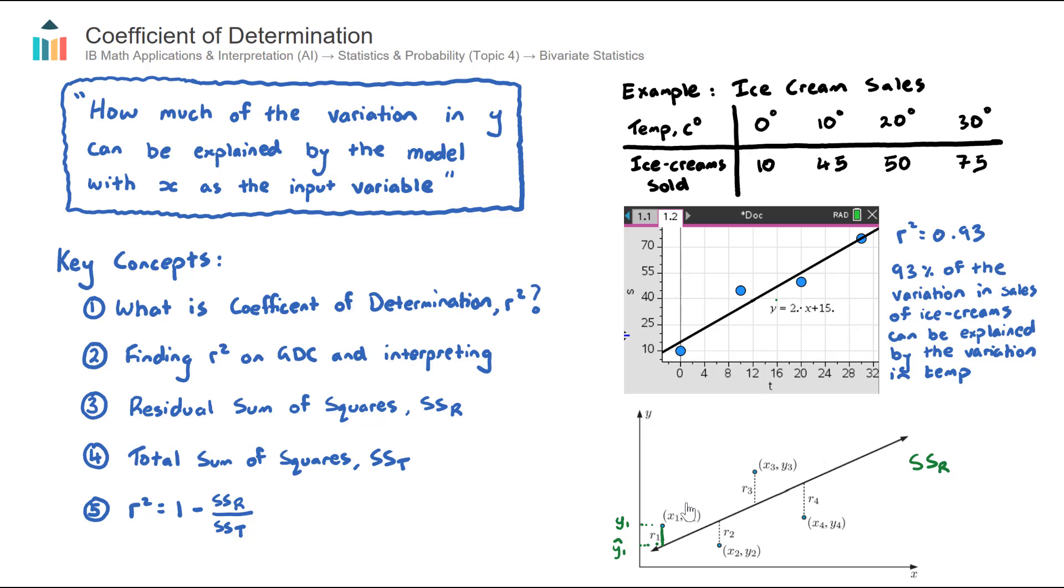Well, what we do is we compare it against this thing called the total sum of squares. And what it is, and I'll choose red for this, we just take the averages of the y's and we draw a horizontal line. I'll just draw it about here. So let's call that y bar. The averages of all the y values, so for example, in our example here, it would just be the average of the ice cream sold, so roughly about 40 or so, somewhere about here.